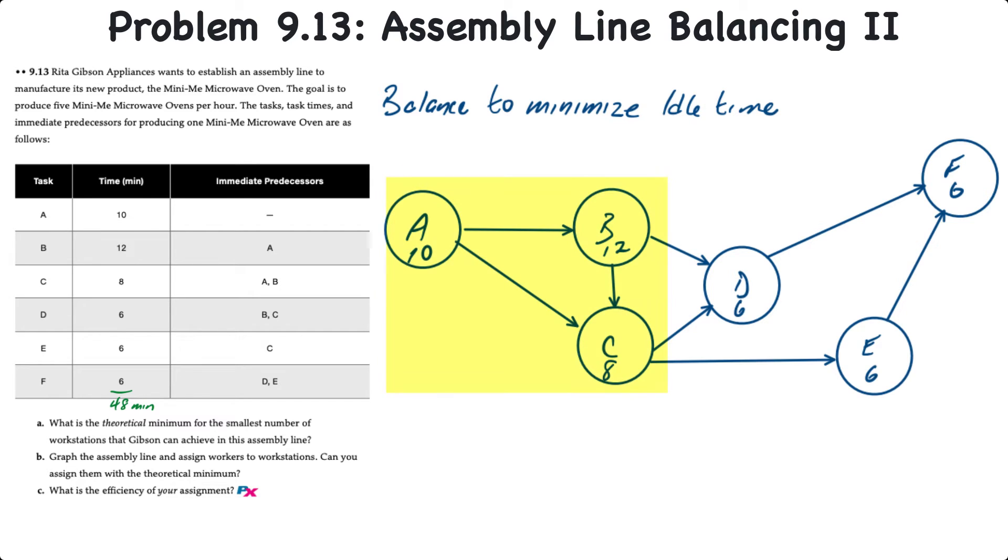So tasks B and C are both preceded by A. C is also preceded by B. D is preceded by both B and C. E is preceded by C. F is preceded by both D and E. In order to balance the line, what we want to do is combine workstations to either be less than or equal to the 12 minute cycle time.